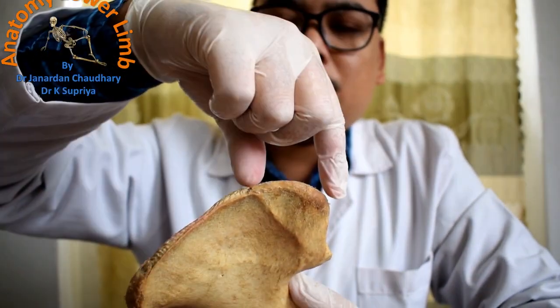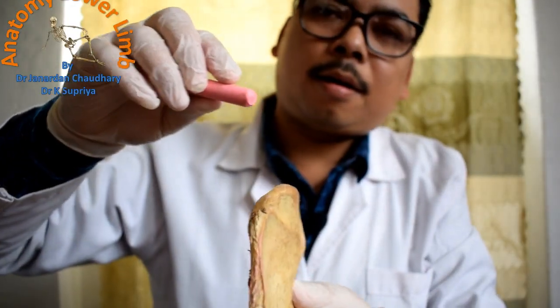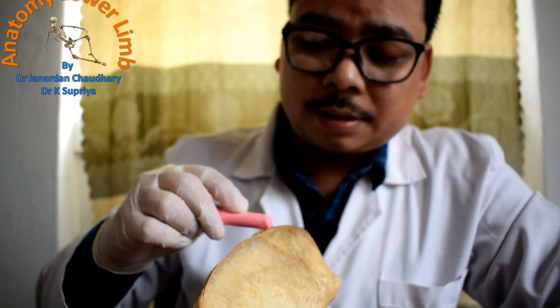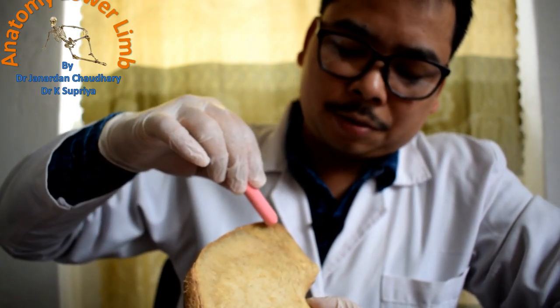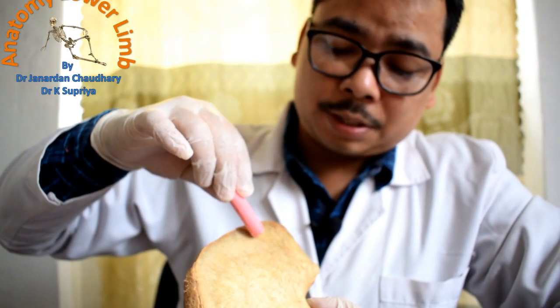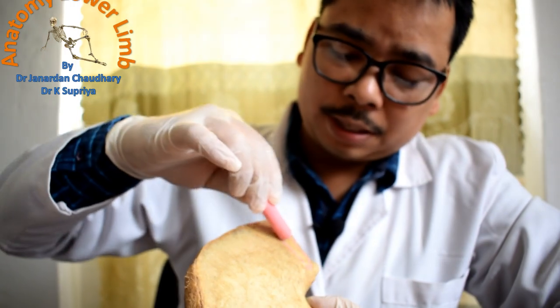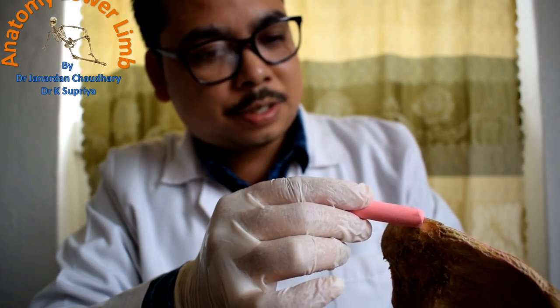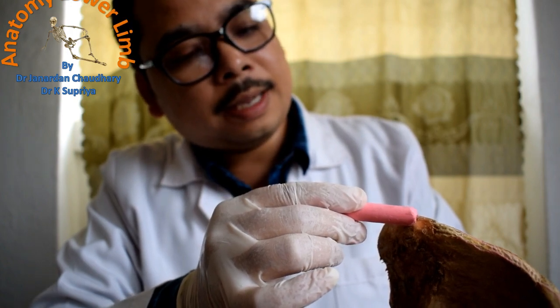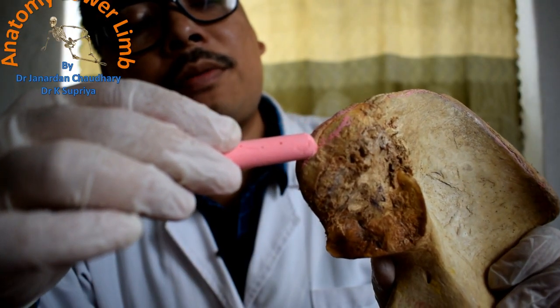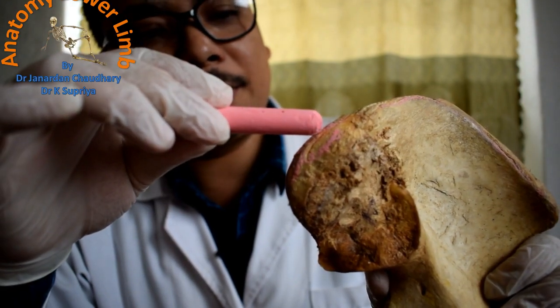The posterior one-third on the ventral segment towards its medial lip gives origin to quadratus lumborum. On the dorsal segment, the lateral surface including the gluteal surface of ilium posterior to the posterior gluteal line gives origin to gluteus maximus. The medial aspect and medial lip on the dorsal segment gives origin to erector spinae.